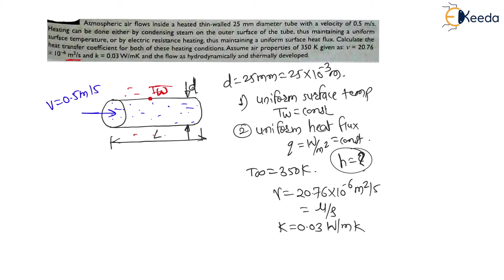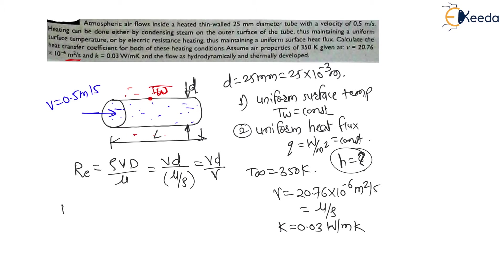First, let us calculate the Reynolds number. For flow through a pipe, Re = ρVD/μ = VD/ν. Therefore Re = (0.5 × 25 × 10⁻³) / (20.76 × 10⁻⁶), which gives Re ≈ 602.